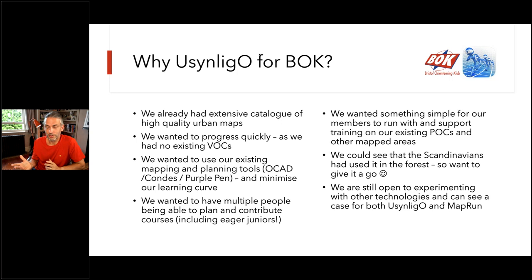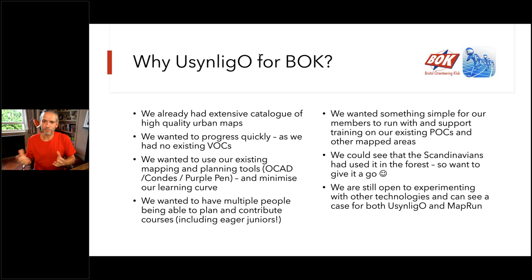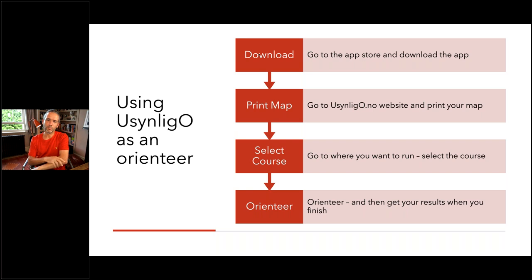Interestingly, what we've found is that the results service in Usinglo is only in the app and not on the website, so in its current form it's not really best suited for informal 60-minute score events where people turn up at similar times and run on the same evening. MapRun is better suited for that use case. We can see a case for having informal events with our neighbours in North Gloucestershire using MapRun. So Usinglo is there to give us an alternative to MapRun, not a complete replacement.